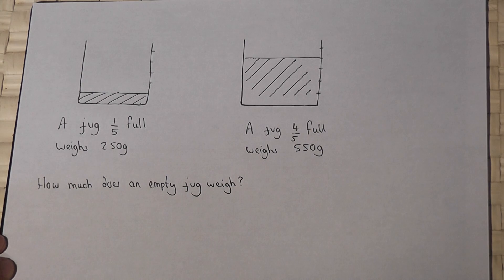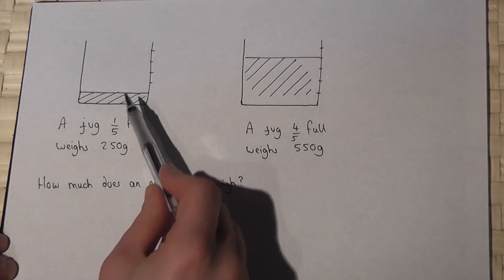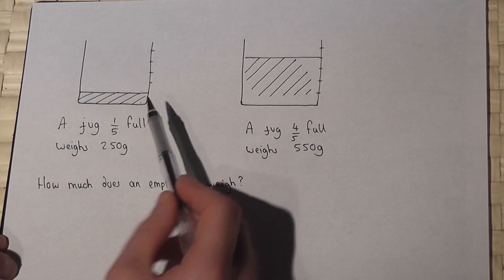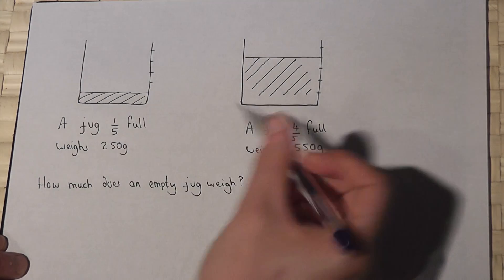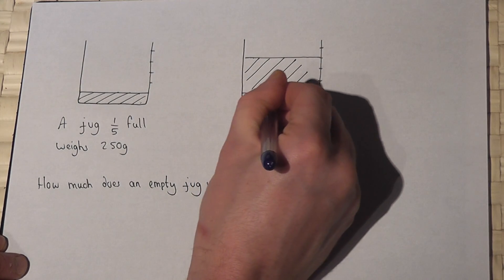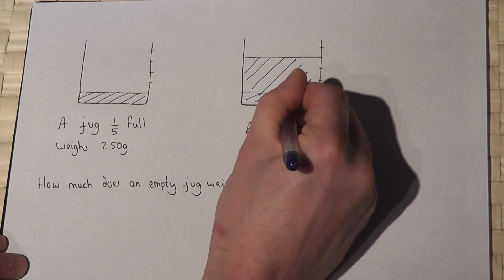Now the trick to this is to think right, let's compare these two jugs. Jug one has got one-fifth in, so jug one is equivalent to this much water being in there.